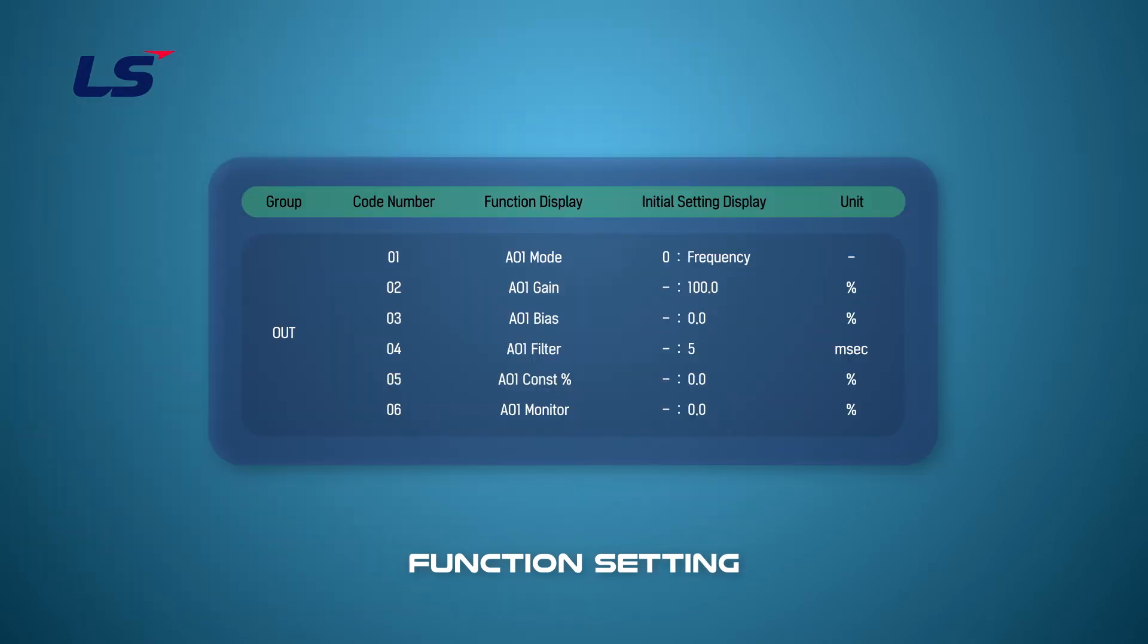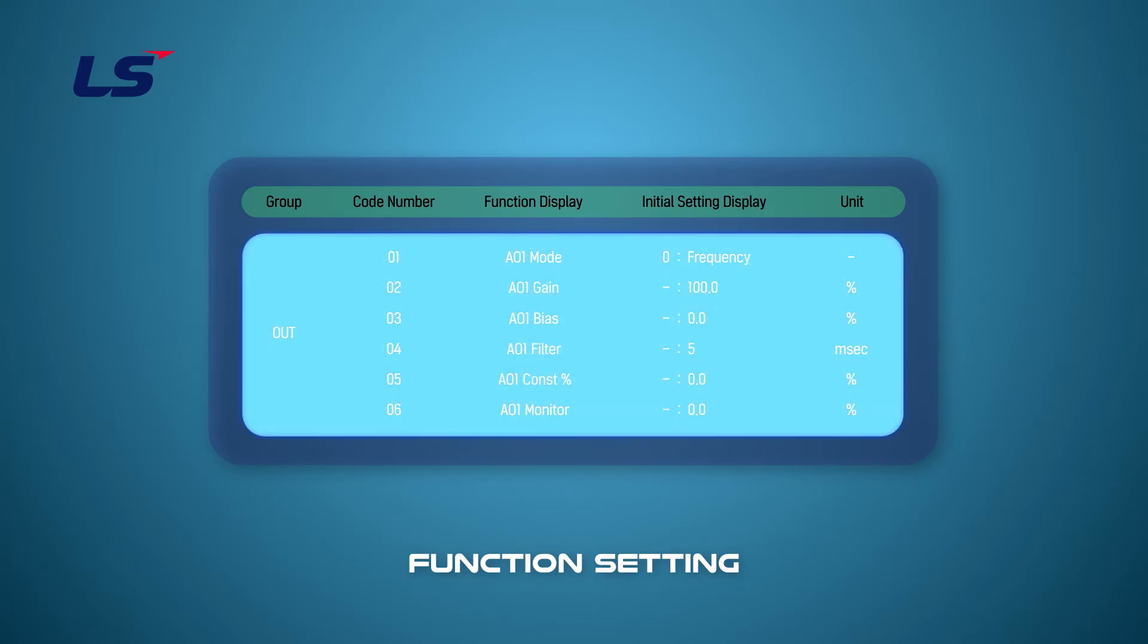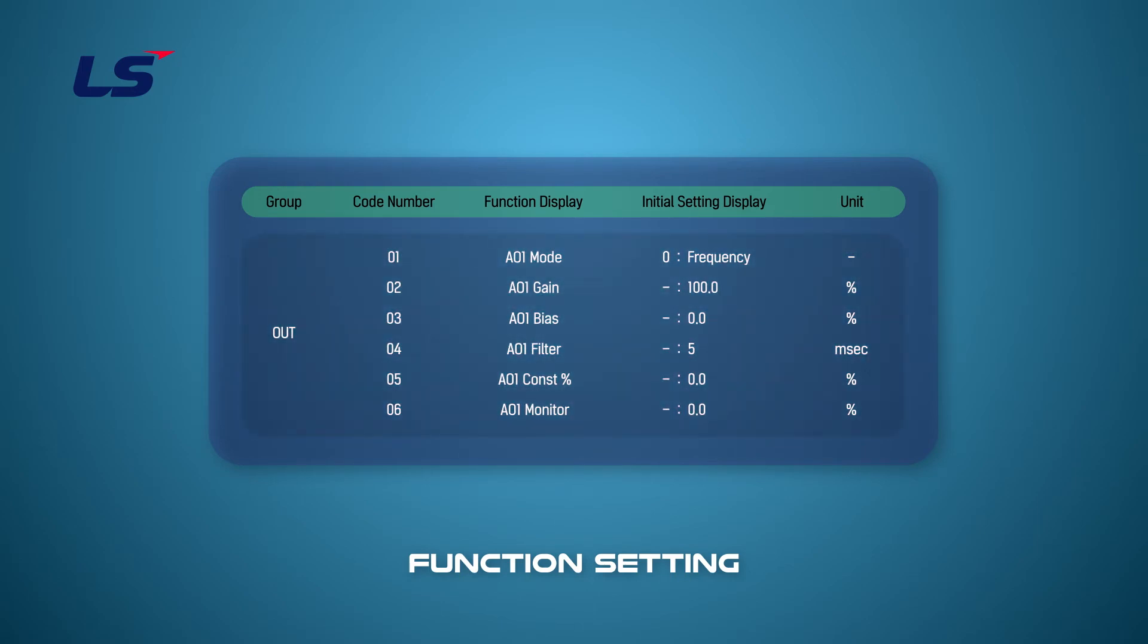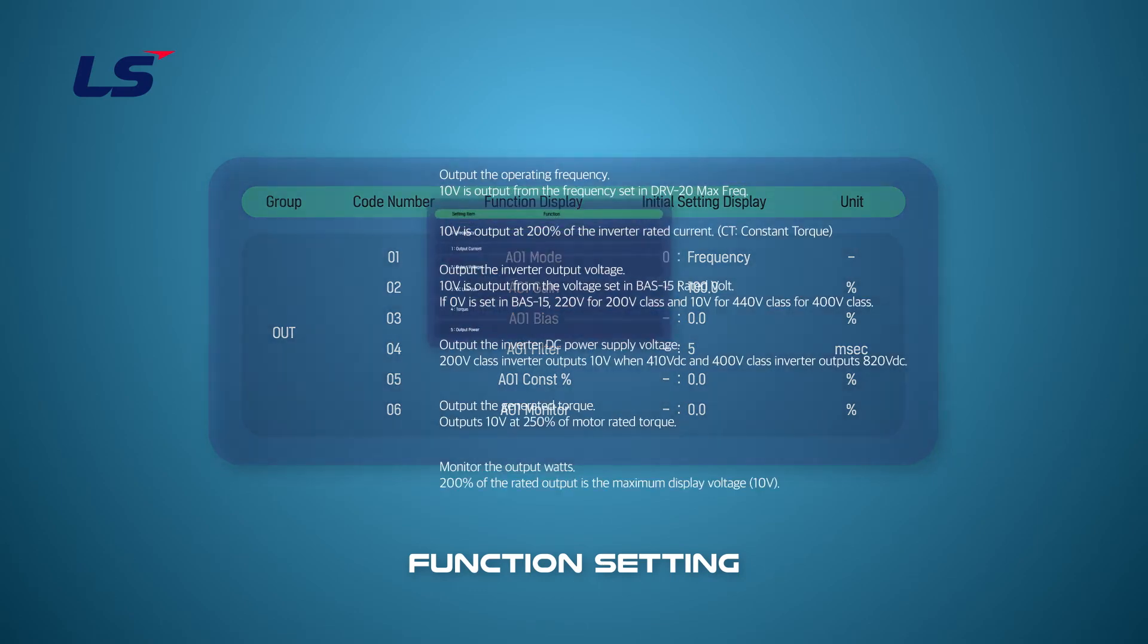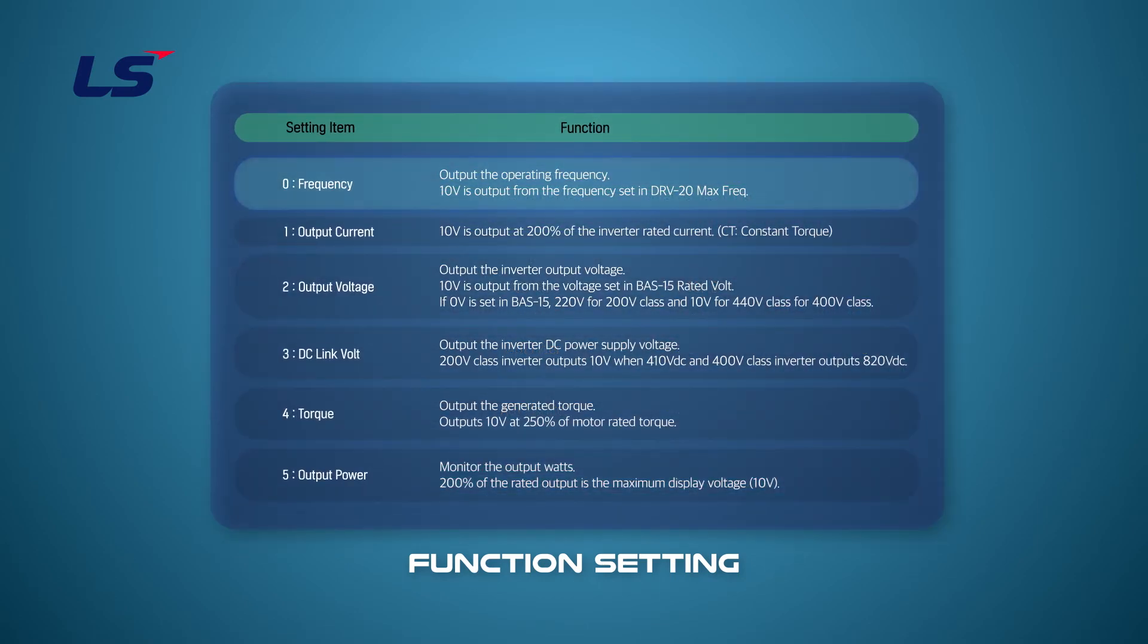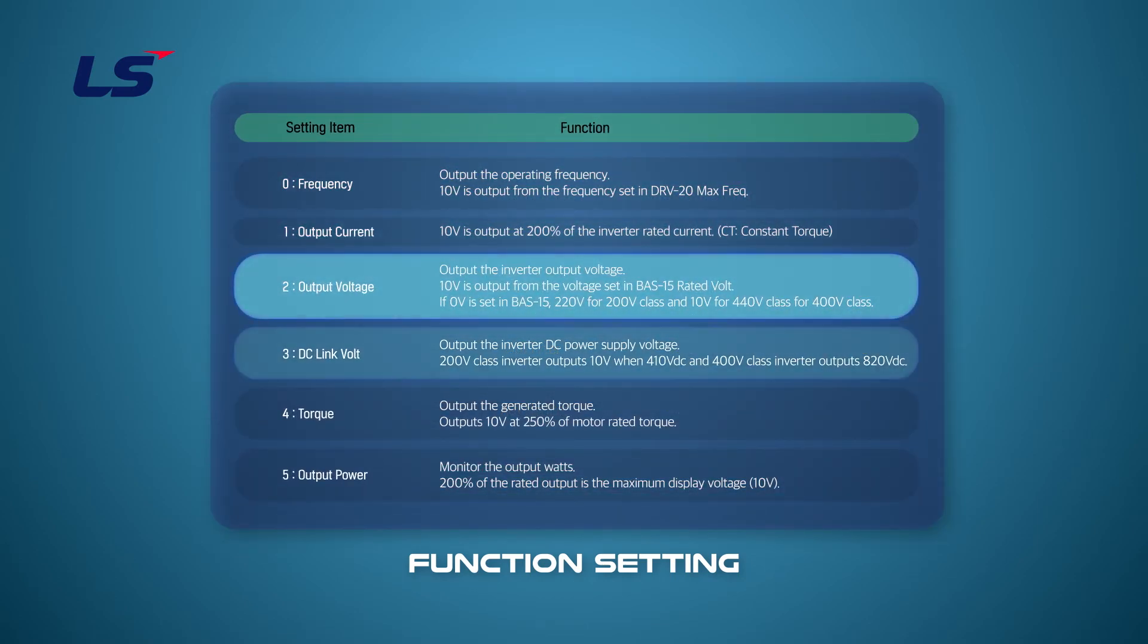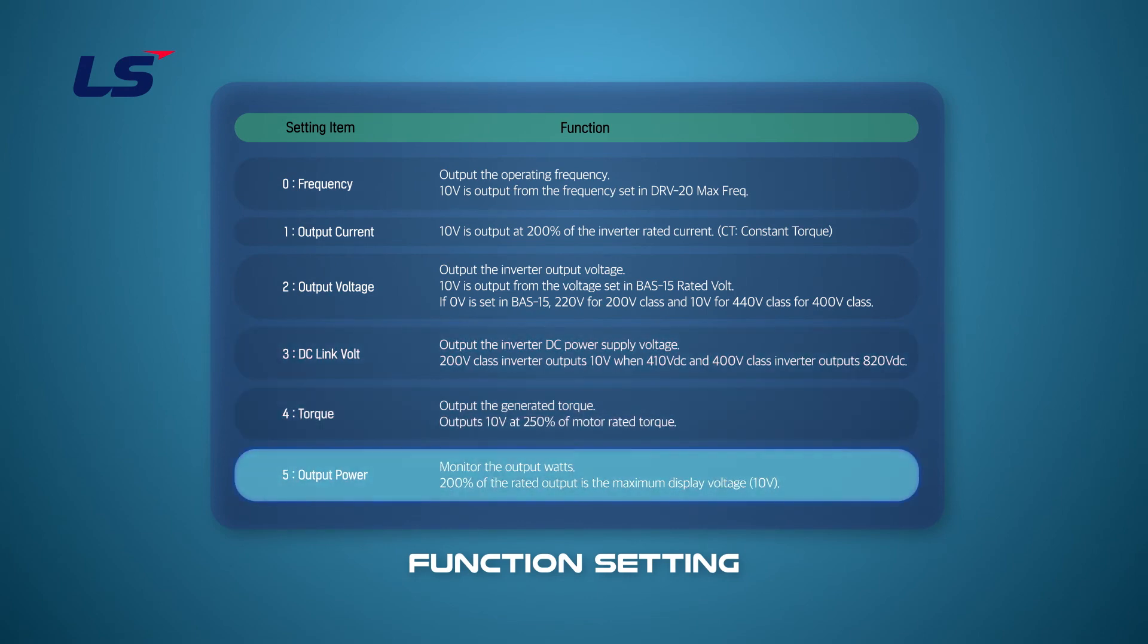Parameters for analog outputs can be set in the OUT group. The AO1 and AO2 terminals are the multi-function output terminals. Therefore, you can select an output item for AO1 directly in parameter OUT group 1. You can select the output item from the driving frequency shown on the screen to the fixed values like output. In this video, we will select the frequency at 0.